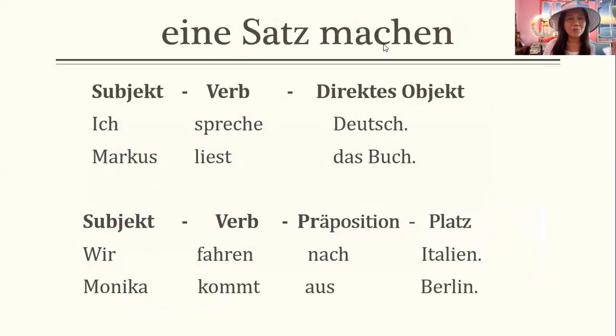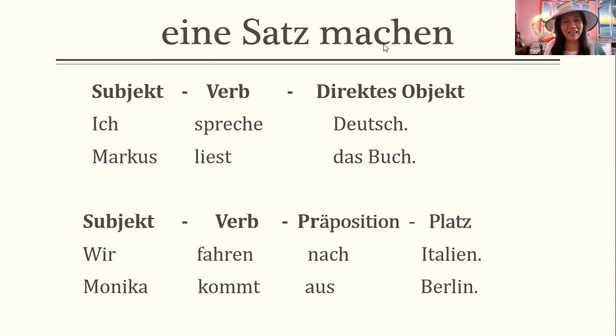How are we going to form a sentence? The pattern is: subject, then verb, then direct object. For example, the subject is ich, the verb is spreche, the direct object is Deutsch — so ich spreche Deutsch, or 'I speak German.' Und dann: Marcus liest das Buch — Marcus reads the book. That's the first pattern.